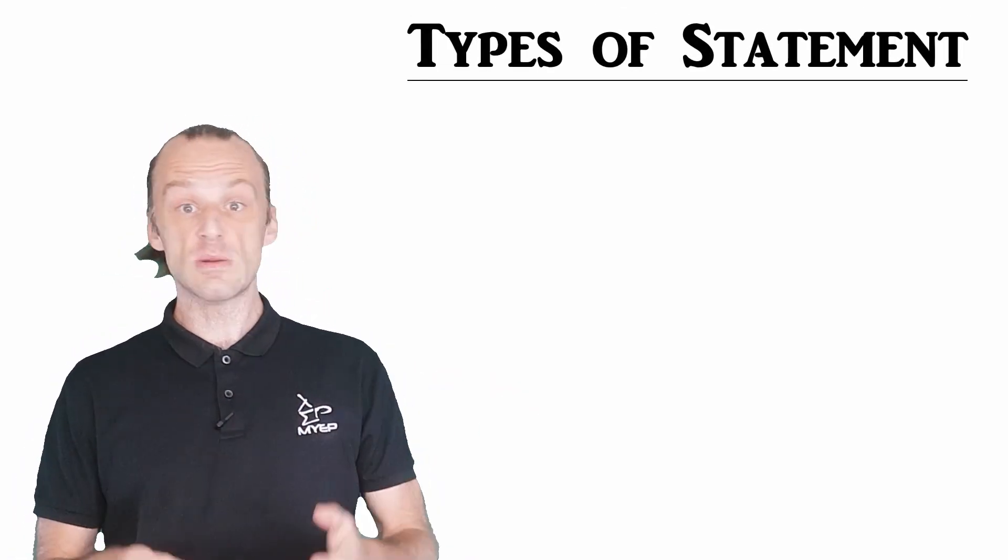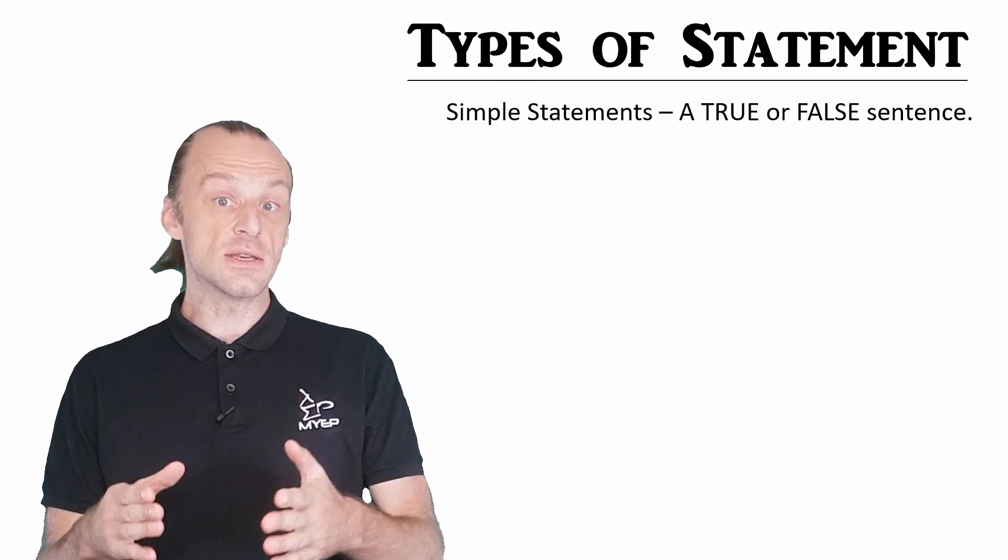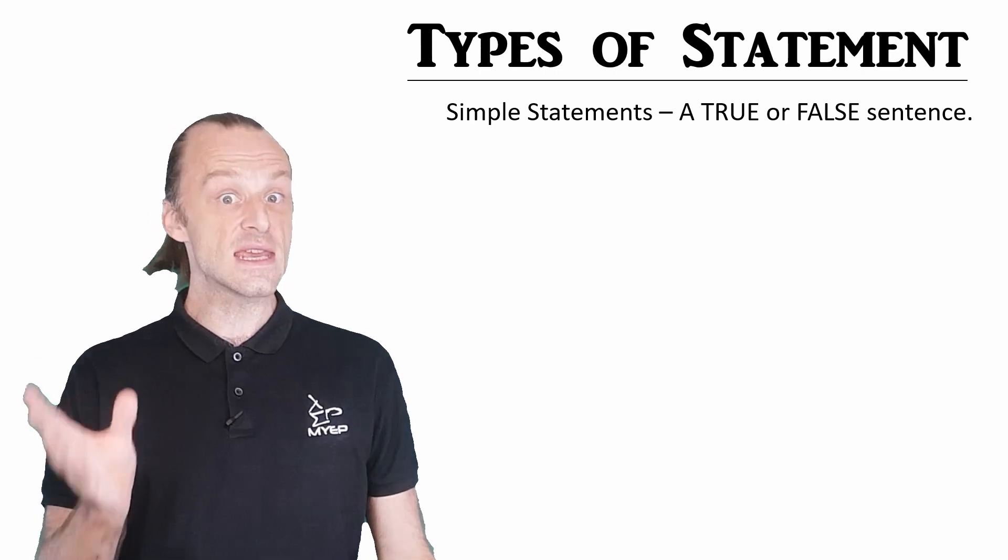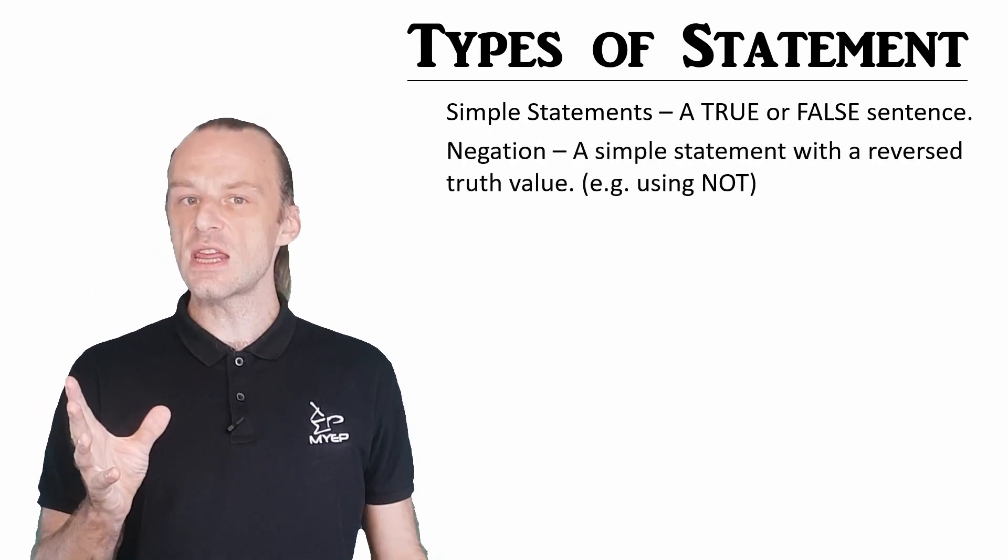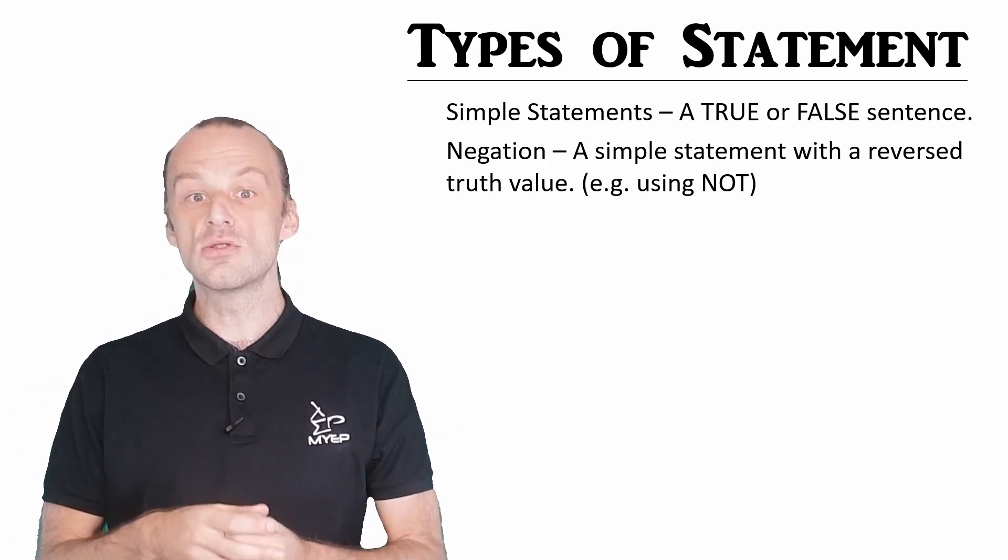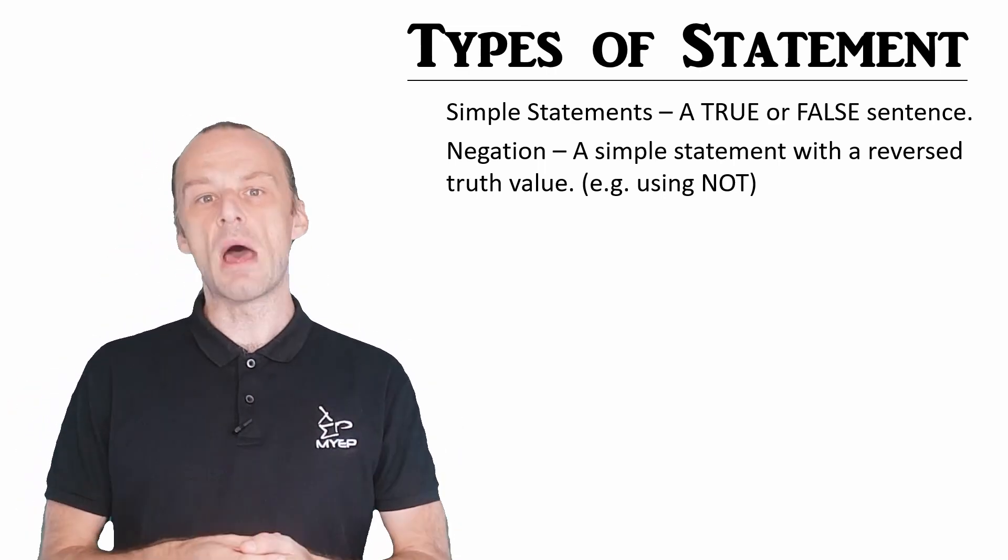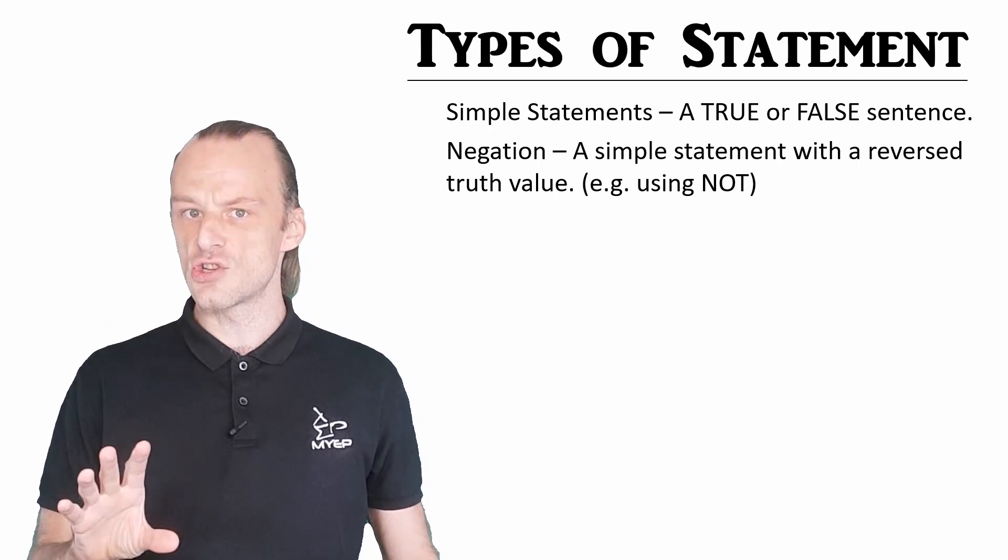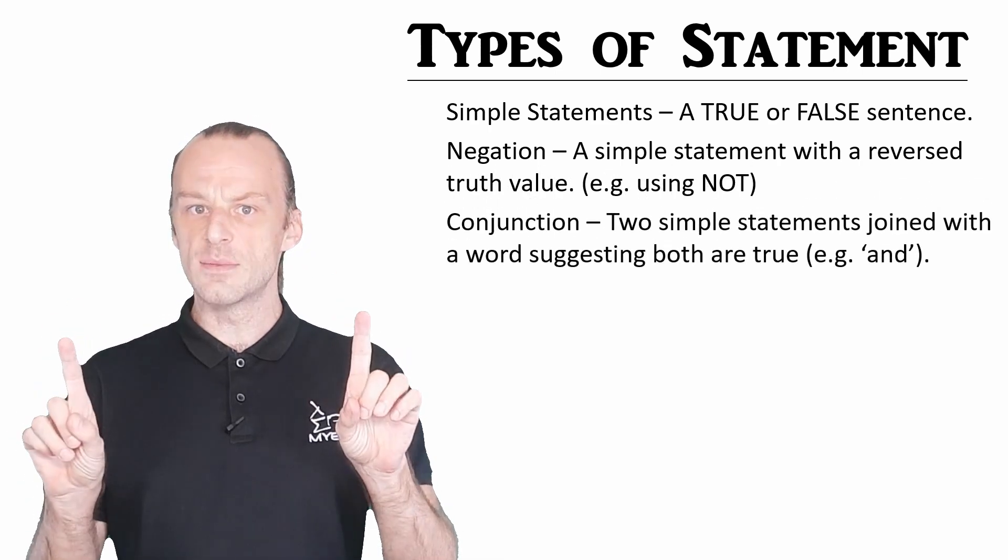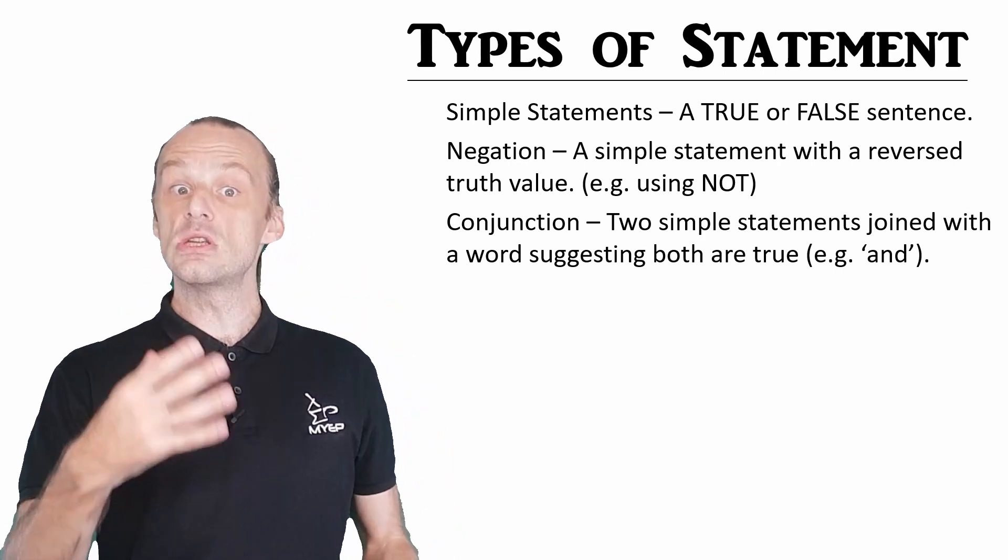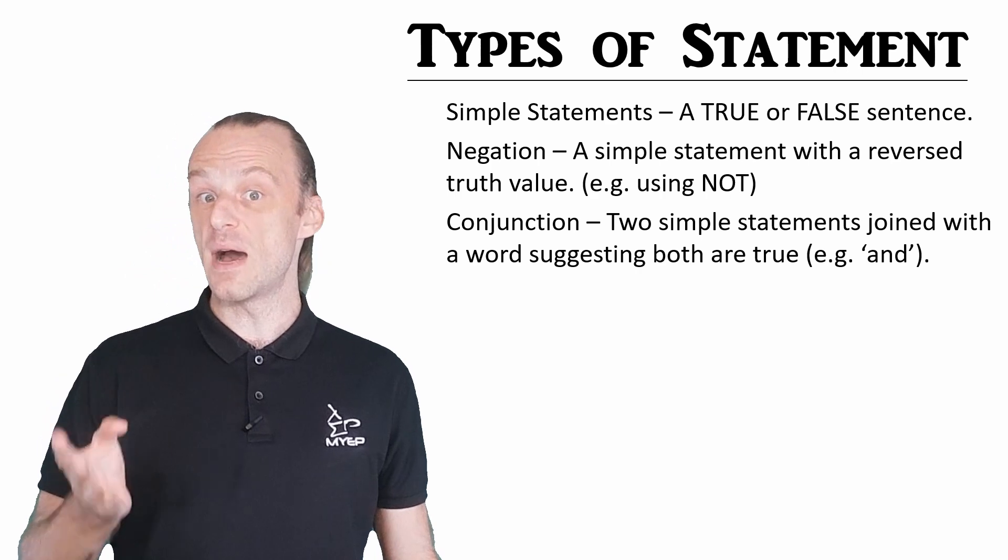I'll just run through the basic types, and then we'll look at them in more detail. We've already talked about simple statements, a sentence that declares something true or false. Then we could also have a negation, which is a simple statement that has a reversed truth value. We will usually use a word like not, or some other negative word. Next, we have the conjunction, which is two simple statements connected so that both are suggested to be true, maybe using a word like and or but.